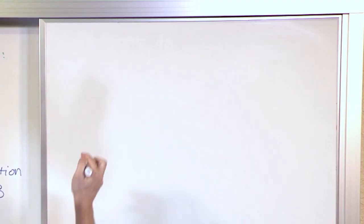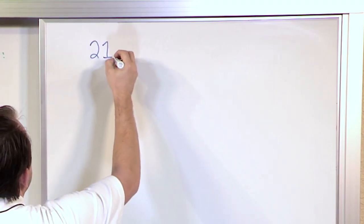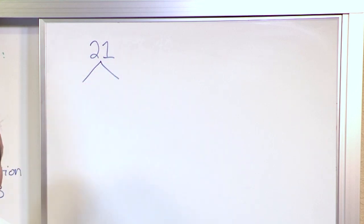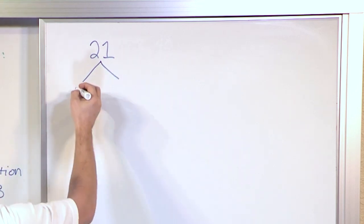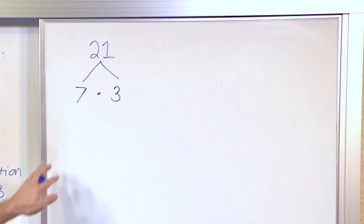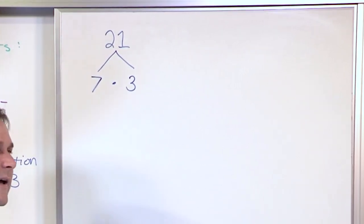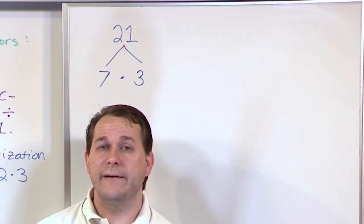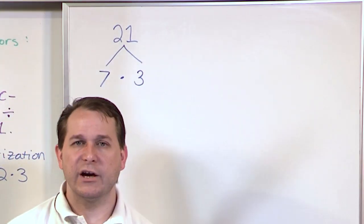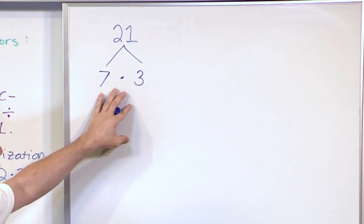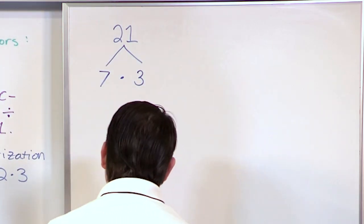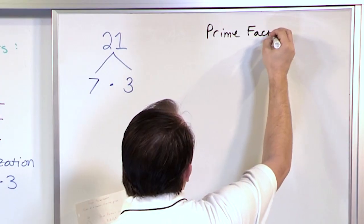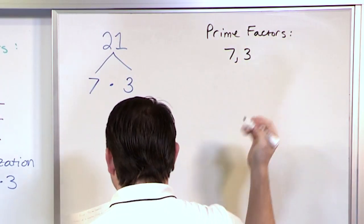Let's do another problem — a simpler one. Let's look at the number 21 and we want to find the prime factorization or the prime factors of 21. What you do is say what times what will give me 21? I'm thinking: 7 times 3 is 21. Then we look at the number 7 and say what times what will give us 7? The only thing that can really multiply together to give you 7 is 1 times 7 — there's nothing else. So 7 is prime, and the same thing with 3, so there's nothing else to do. The prime factors of 21 are simply 7 and 3.